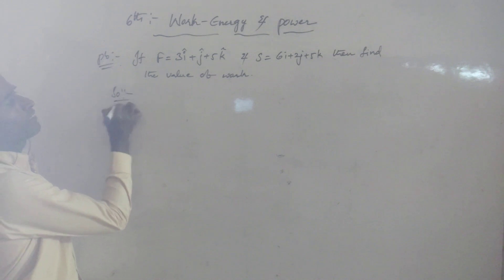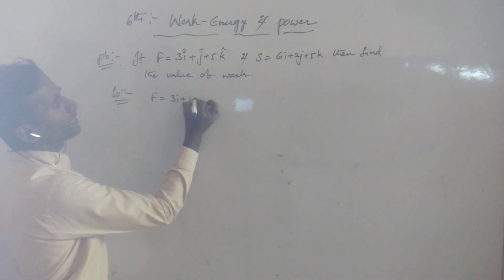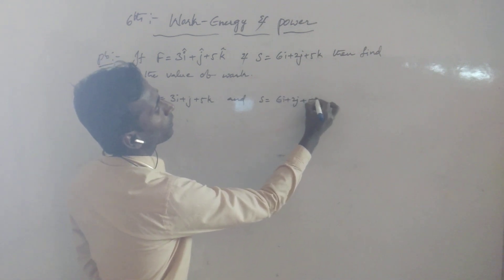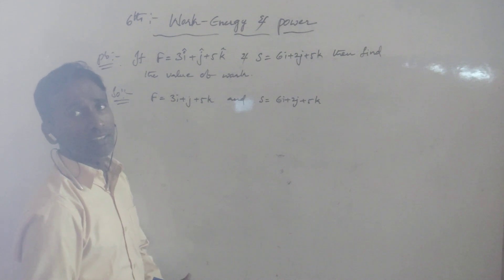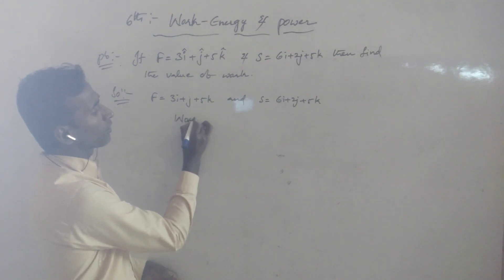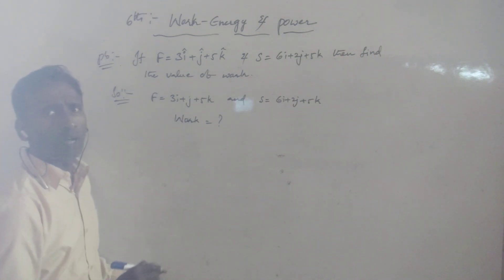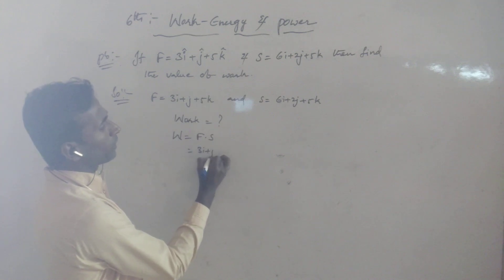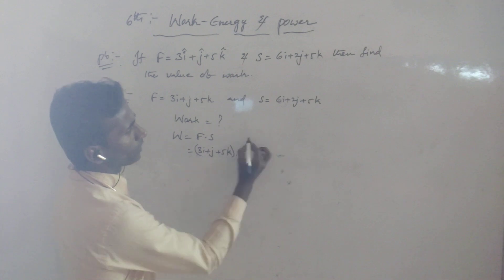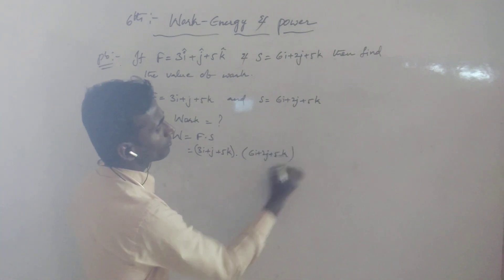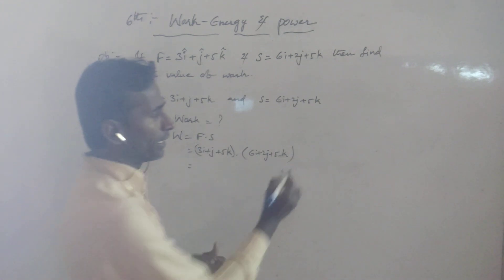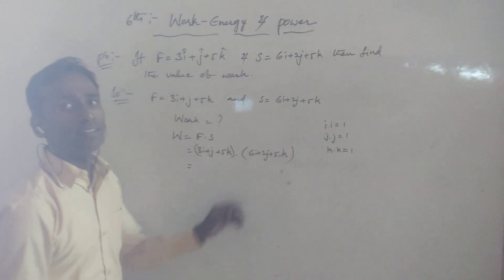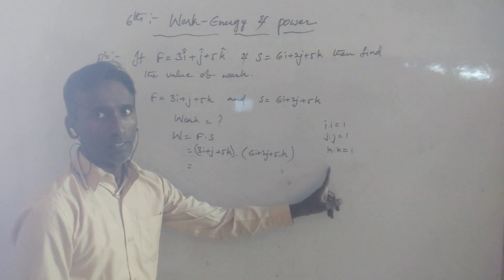First of all, write: given. F is equals to 3i plus j plus 5k, and displacement S is equals to 6i plus 2j plus 5k. These are the two values given in that question. He is asking, what is work? According to the definition of work, the formula is W equals F dot S. In the dot product we have the condition: i·i = 1, j·j = 1, and k·k = 1. This is the condition in scalar product, not vector product.